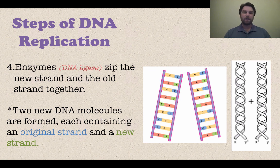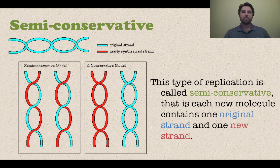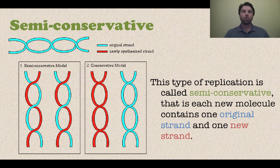What you really need to understand here is that two brand new DNA molecules are formed, but each of those molecules has an original strand that we started with and a new strand. Because of this, we call DNA replication a semi-conservative process — the blue strand is original and the red is a newly synthesized strand after replication. Starting with a double helix of two blue strands, after DNA replication you have two different DNA molecules, each containing one original strand and one new strand.